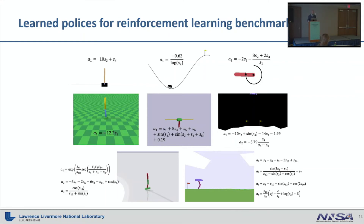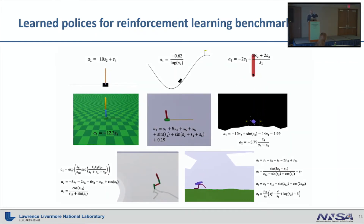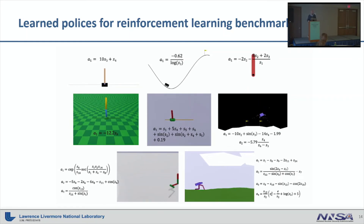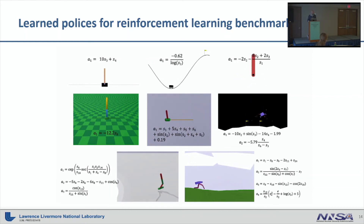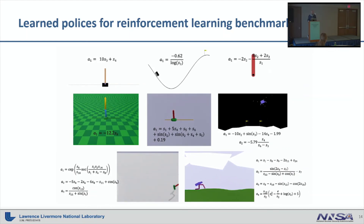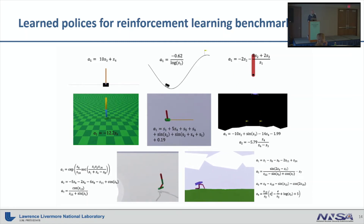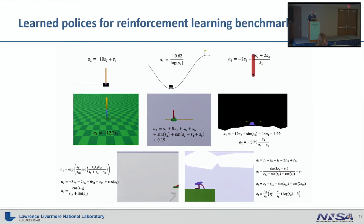Applying this idea, we found highly performant symbolic policies for a variety of environments. We often achieve comparable or improved performance on standard reinforcement learning benchmarks, while drastically reducing the complexity of existing neural network models. As an additional benefit, the symbolic form clearly shows which input parameters are relevant for the control policy of each action dimension, while others are pruned away. We demonstrate this on tasks with multi-dimensional action spaces, up to four dimensions in the bipedal walker example.